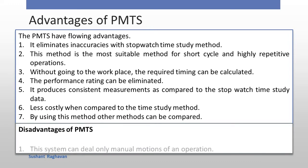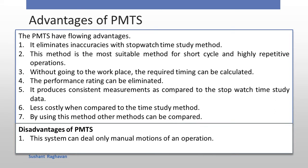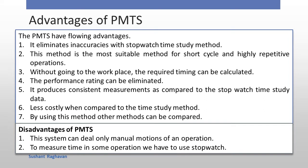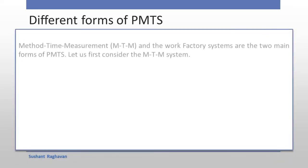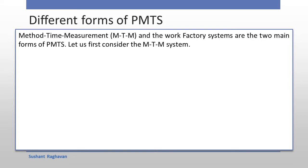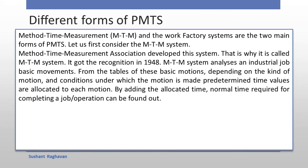Disadvantages of PMTS: This system can deal only with manual motions, which is the most suitable means of an operation. To measure time in some operations, we have to use a stopwatch. Different forms of PMTS: Method Time Measurement (MTM) and the Work Factory systems are the two main forms of PMTS. Let us first consider the MTM system. The Method Time Measurement Association developed this system, which is why it is called the MTM system. It received recognition in 1948.